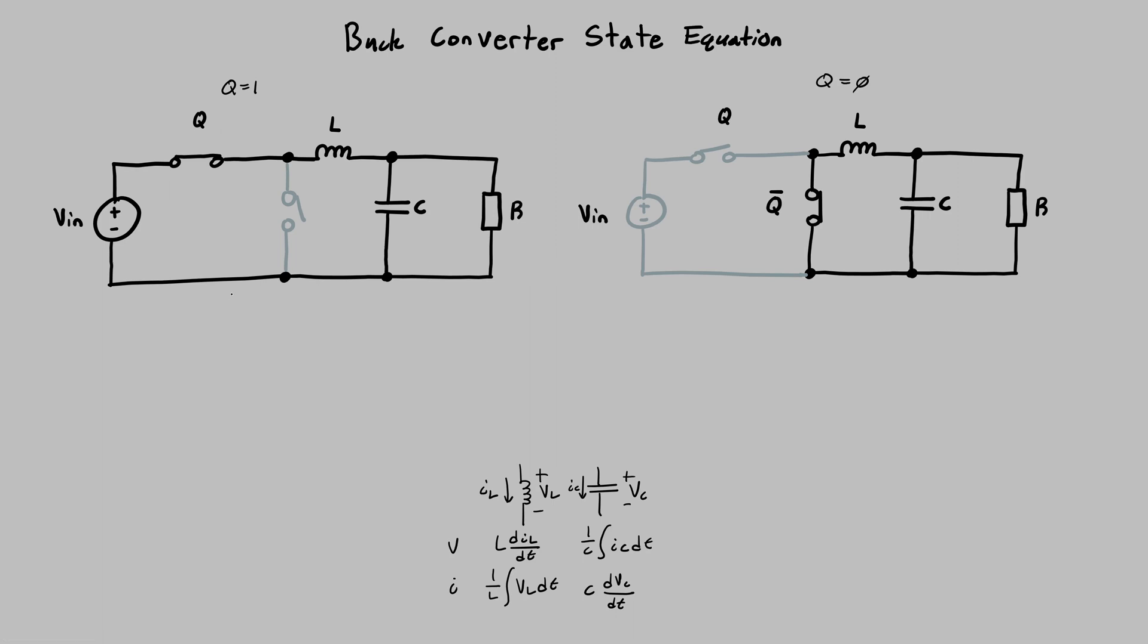So we just start out with the left one, which assumes that Q is equal to 1, which is the top switch closed and the bottom switch open. This effectively just gets rid of that whole switch. So you can see with using KVL, you can solve this loop. And using KCL, you'll be able to solve the current flowing in and out of the capacitor.